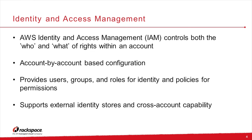An IAM user is an entity you create within AWS IAM to represent a person or a service; it consists of a name and credentials. An IAM group is a collection of IAM users you can apply policies to — it's a scaling model for attaching policies to many users at once. It's important to note that a group isn't a true identity within IAM because you can't use it to identify a group when writing a permissions policy.